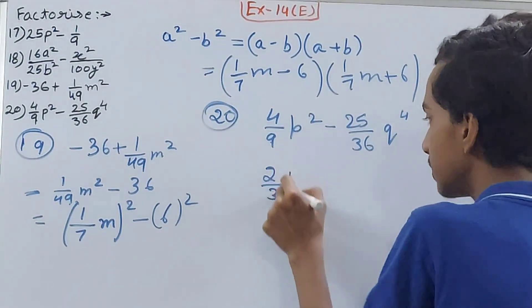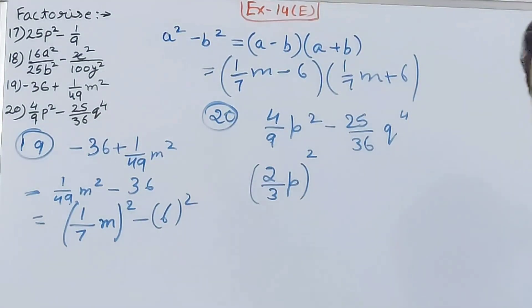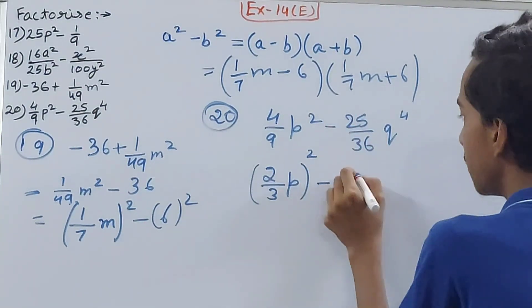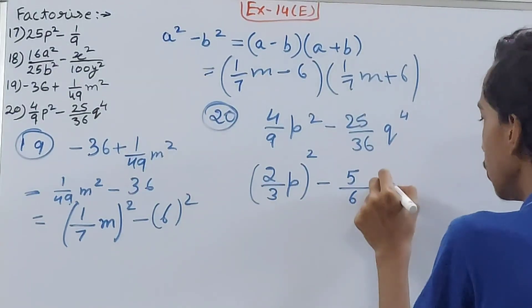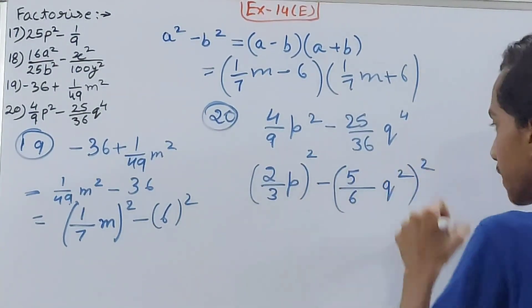Now see here what you will have: minus 25 is the square of 5, 36 is the square of 6, q⁴ is the square of q². Now put it here whole square.